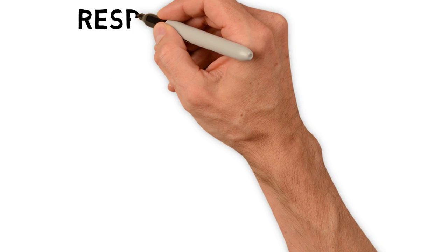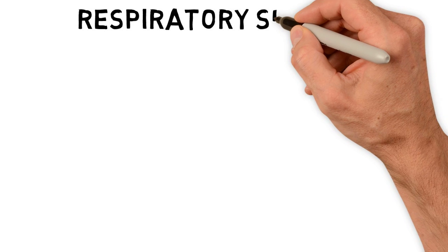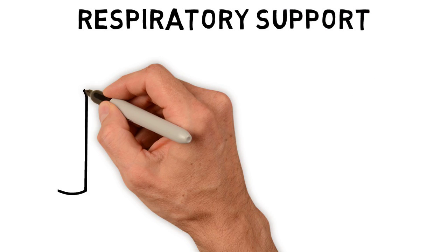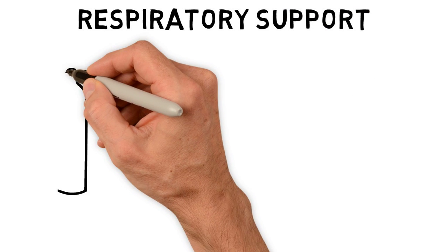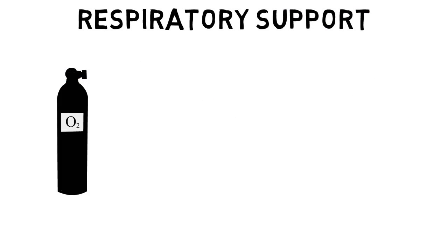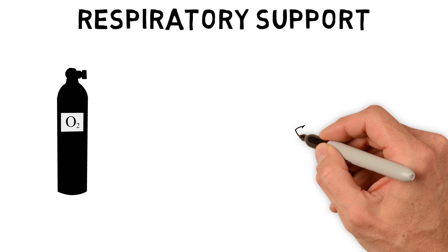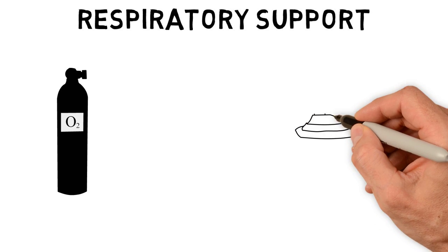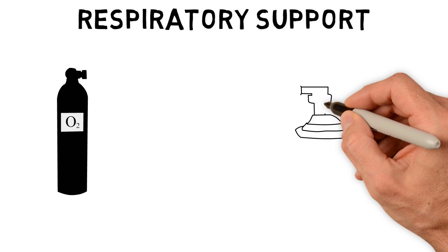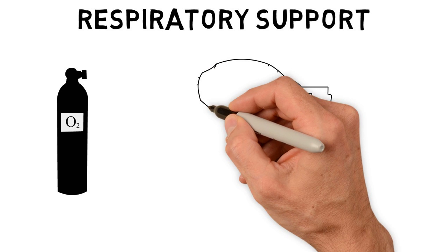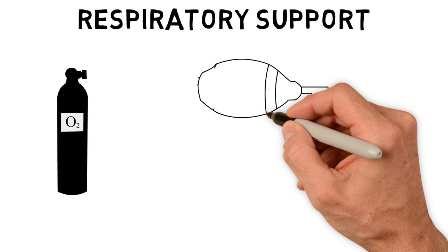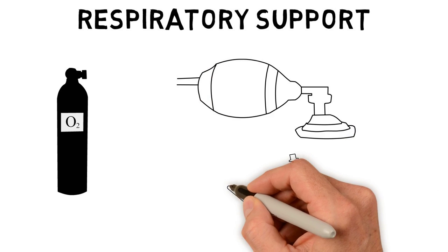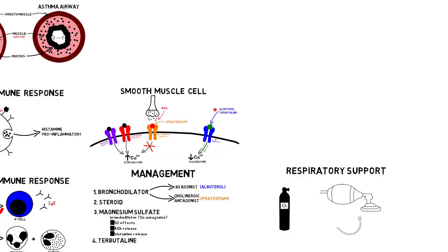Untreated severe asthma leads to respiratory failure, and respiratory support should always be paired with medications. First line is oxygen. If patients are still in distress despite oxygen and medications, consider positive pressure ventilation or even intubation.